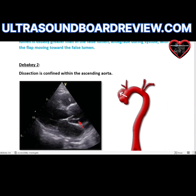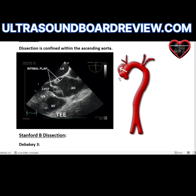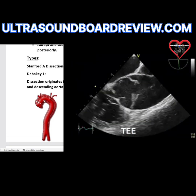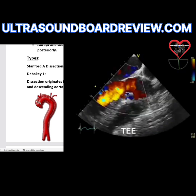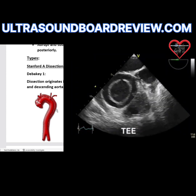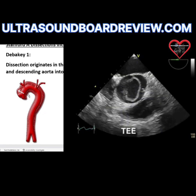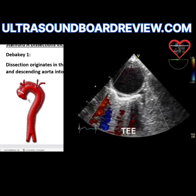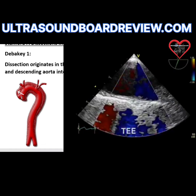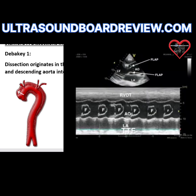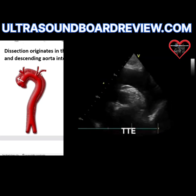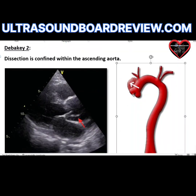DeBakey 2 only dissects the ascending aorta. DeBakey 1 and DeBakey 2 are the most dangerous because if the ascending aorta dissects, it will affect blood flow going to the coronary arteries, which branch there. You can see in this image it's dissecting the sinus of Valsalva and beyond. If the coronary arteries are compromised, that will inhibit blood from entering them to perfuse the myocardium. Stanford A is the most dangerous period because both DeBakey 1 and DeBakey 2 involve the ascending aorta.